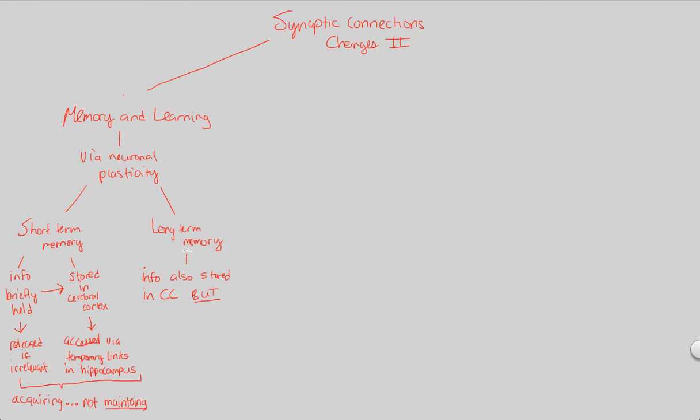This is the differentiator between short-term and long-term. Though the information is stored there, just like it is for short-term memory, the connections that are necessary to retrieve it, the synapses that fire when you want to retrieve something from long-term memory, those connections are also within the cerebral cortex.